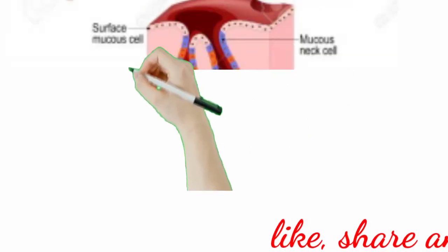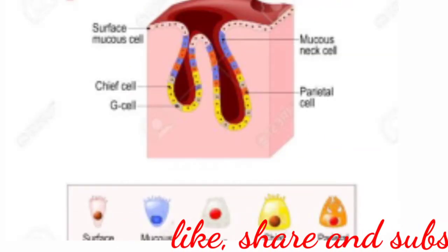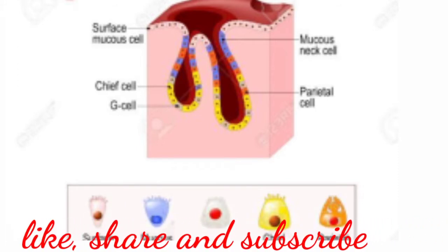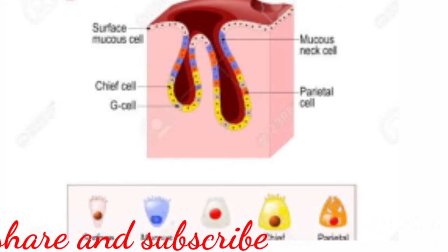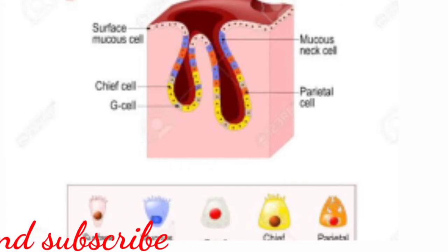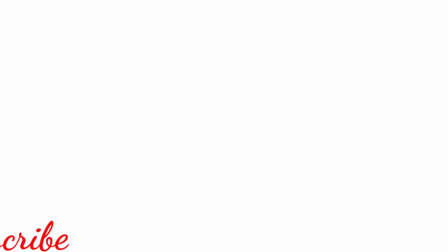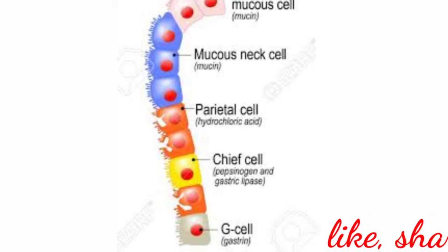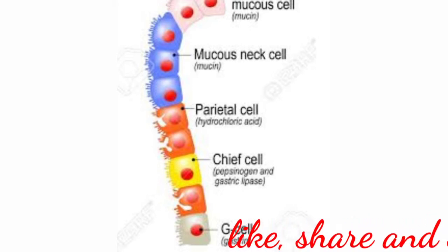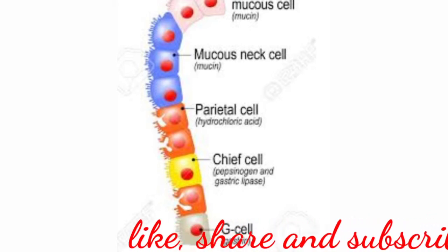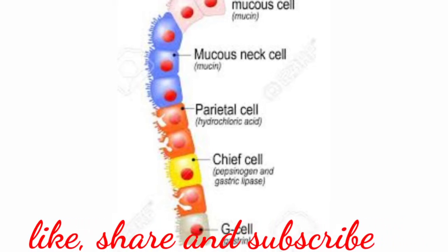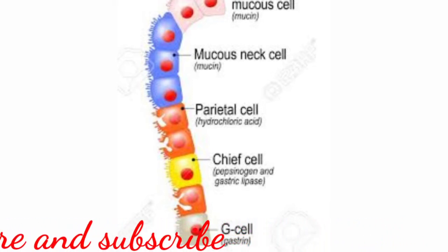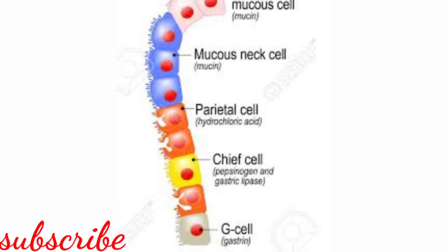Gastric glands: the wall of the stomach is lined by gastric glands. The chief cells or peptic cells in the gastric glands secrete gastric enzymes, and goblet cells secrete mucus. The oxyntic cells secrete HCl — hydrochloric acid — and intrinsic factor, used for absorption of vitamin B12.